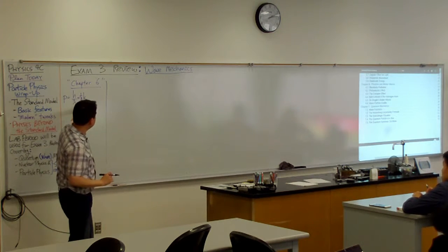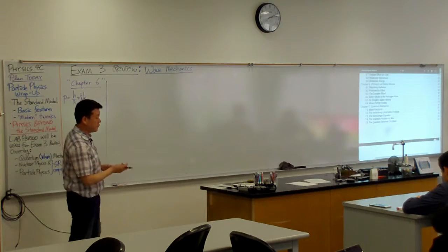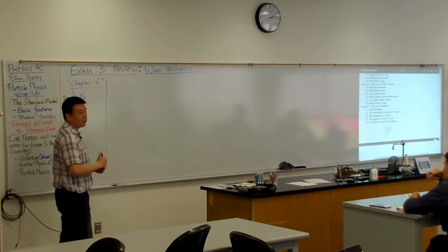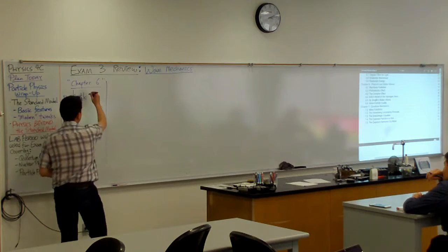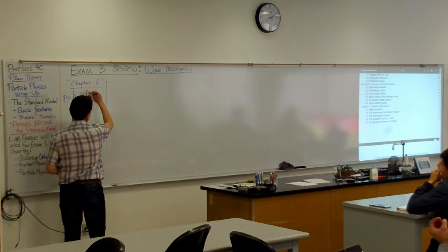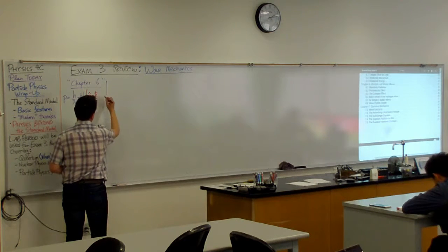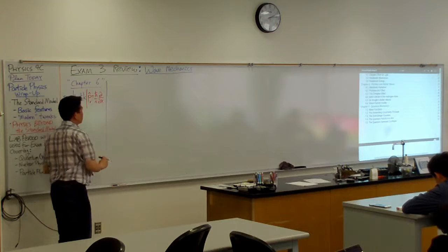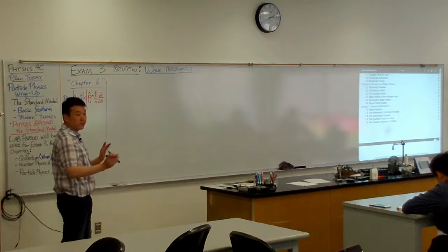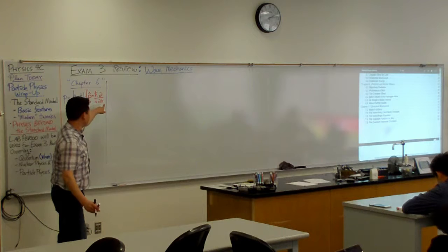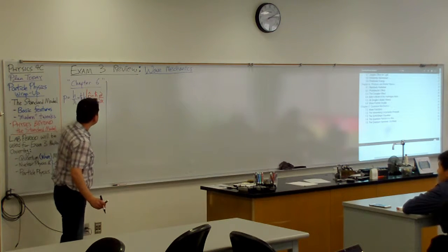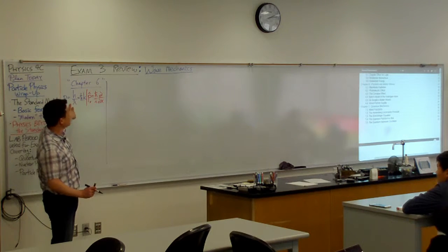The reason I prefer the h-bar times wave number form over h over lambda in wave mechanics is because of the hint at the operator form of momentum. The momentum operator is h-bar over i, partial derivative with respect to position. Technically this is the x-momentum operator; for the y or z components of momentum, you'd use y or z accordingly. This reaches all the way back to chapter six material.